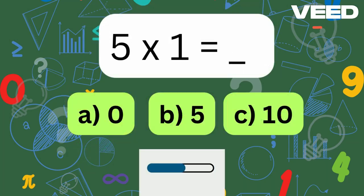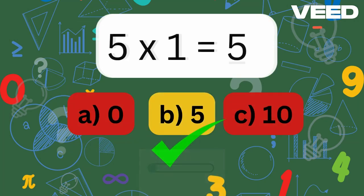5 times 1 is? That's right, 5 times 1 is 5.